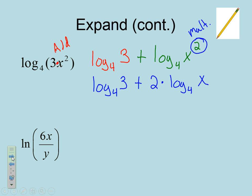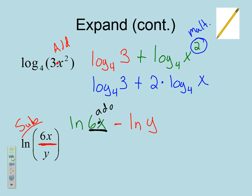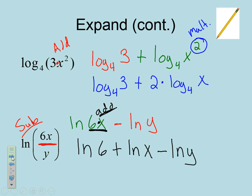Now our last expansion example. Ln is the same idea as log. We have division here, so the first thing we have to take care of is turning this into a subtraction problem. I'm going to start by saying Ln of 6x minus Ln of y. Now I have a problem because I have two things — a number and a variable — and I can only have one number or variable per spot when expanding. Since 6x is multiplication, we use addition to separate it. So the final answer is the natural log of 6 plus the natural log of x, minus the natural log of y.